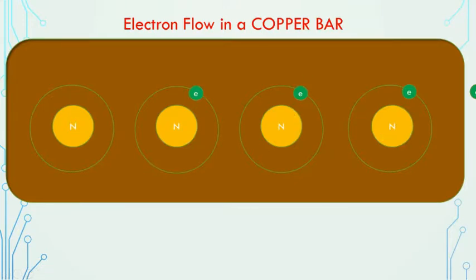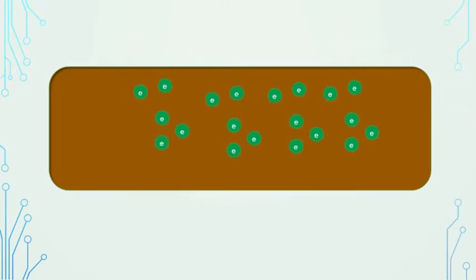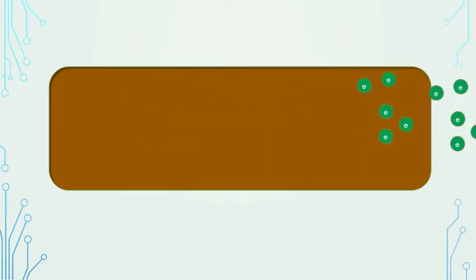This particular copper bar has a lot of free electrons because this is basically a conductor, so it has a lot of atoms like this and it has a lot of free electrons, so current will be continuously flowing through this copper bar. It means the electrons flow is happening continuously.